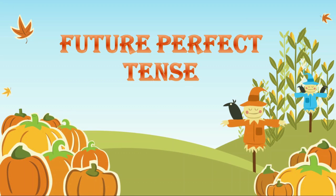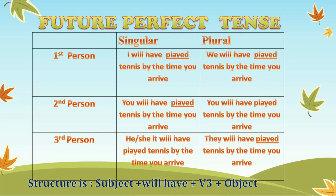Next, let's look at future perfect tense. The future perfect is a verb tense used for actions that will be completed before some other point in the future. The formula is: subject plus will have plus third form of verb plus object. For example, 'I will have played tennis by the time you arrive' — I is the subject, will have is the auxiliary, played is the verb in its third form, and tennis is the object.